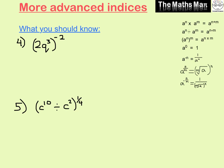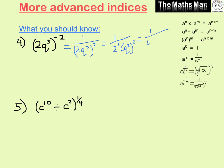Looking at number 4, when we see the negative power we write 1 over, changing it to a fraction: 1 over (2q³)². Now we square everything inside the brackets on the bottom — that's 2 squared times q cubed squared. 2 squared is 4, and multiplying the indices in the brackets gives q to the power of 6. So the answer is 1 over 4q to the power of 6.